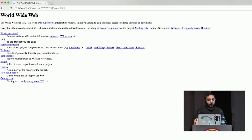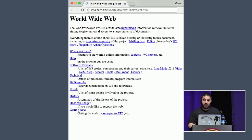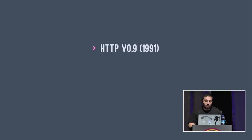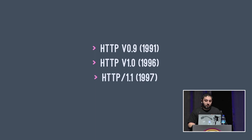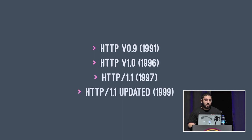Years before the creation of JPEGs or Windows 3.1, with just HTTP and HTML, the first ever web page was deployed, and it was responsive. The first version of HTTP was documented in 1991, with multiple versions and revisions over the next eight years, until HTTP 1.1 was finalized in 1999, and modern internet was born.